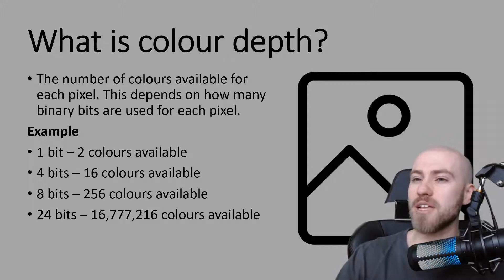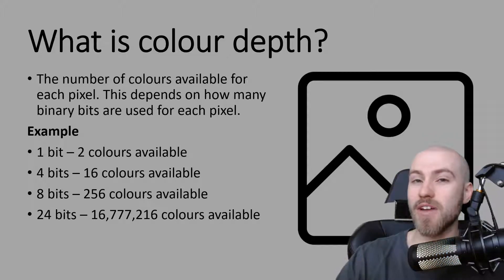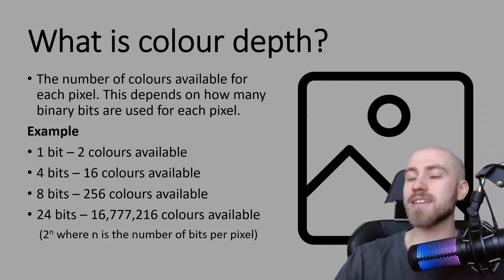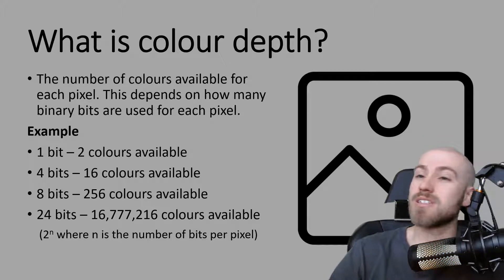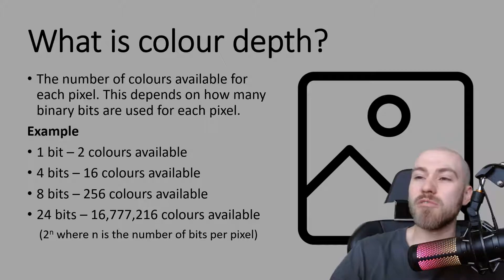24 bits would give over 16 million colors available. To calculate that, there is a formula: you can do 2 to the power of n, where n is the number of bits per pixel.